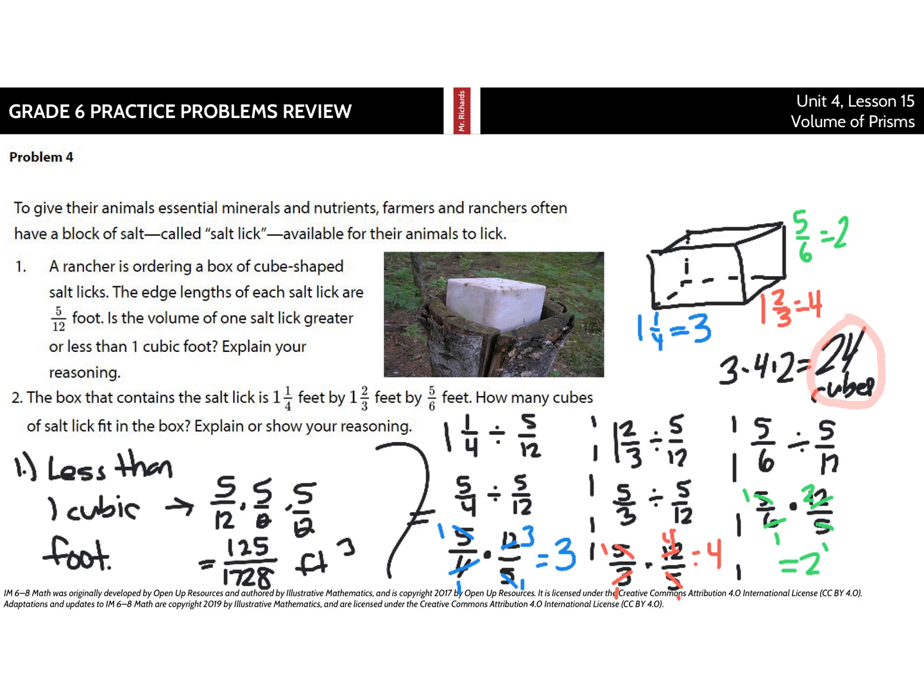Now, very similar to I believe it was question two on this assignment. The box that contains the salt lick, so the box we're packing these things into, is one and a fourth feet by one and two-thirds feet by five-sixths of a foot. How many cubes of salt lick fit in the box? Explain or show your reasoning. And so, once again, we have this box. We're going to be putting in these little things of salt lick here. But how many can fit in? Well, for this one and one-fourth side, we're going to have to take one and one-fourth and divide it by the five-twelfths that each of these cube pieces of salt edge lengths are.